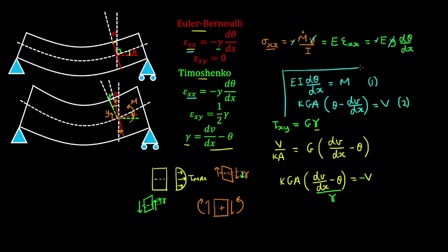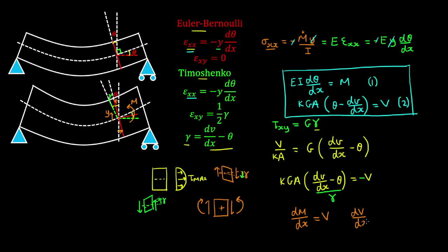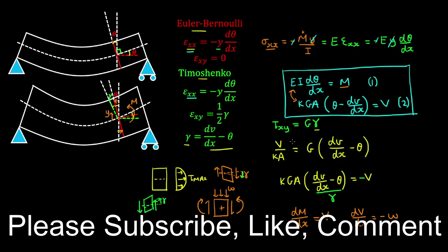We can integrate these expressions to obtain the deflections and rotations of the Timoshenko beam. Recall that the derivative of the bending moment equals the shear force, and the derivative of the shear force equals the negative of the uniformly distributed load. By differentiating and equating these equations, you can obtain further equations describing the behaviour of the beam — this is left as an exercise.